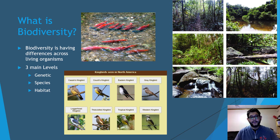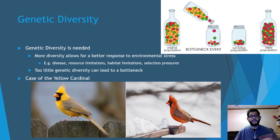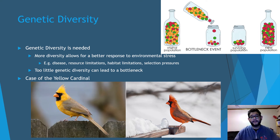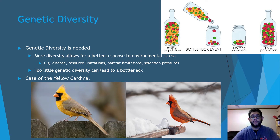Having an increase in these forms of biodiversity helps quite a bit for an ecosystem. The more genetic diversity you have, the better the response when there's environmental stress. For example, if there's a disease, a limit in resources or habitat, or even pressure from an outside source, having diversity allows the species to do much better in a long-term picture. If you have too little genetic diversity, that can lead to a bottleneck event, and as the diagram shows, you may not end up with the type of genetics that help you long term — the new population may not be so great.